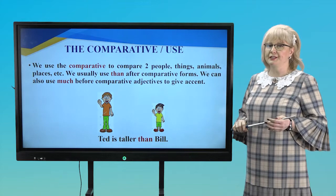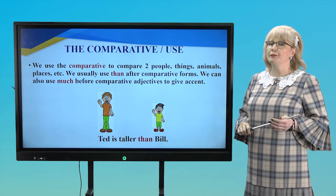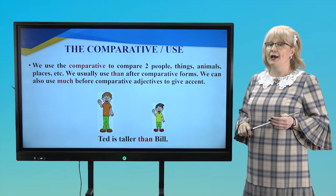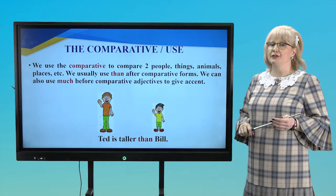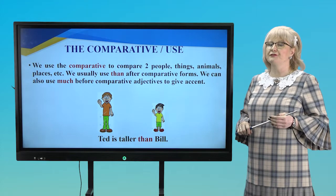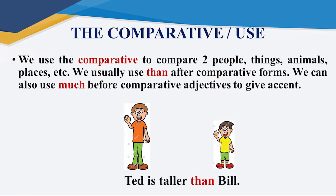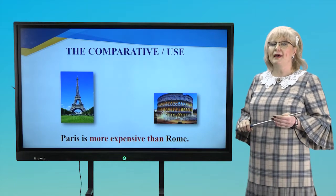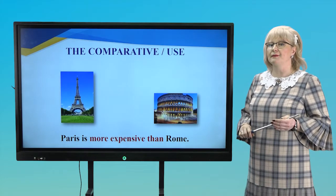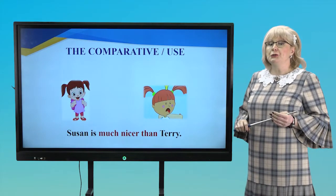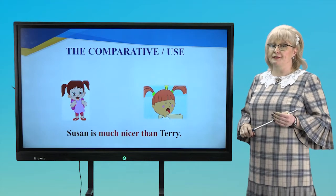Listen very attentively. We use the comparative to compare two people, things, animals, places, etc. We usually use them after comparative forms. We can also use much before comparative adjectives to give accent. For example, Ted is taller than Bill. Paris is more expensive than Rome. Susan is much nicer than Terry.